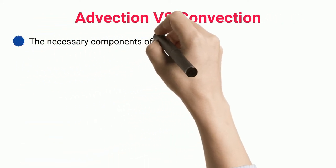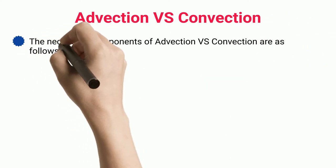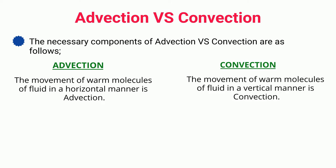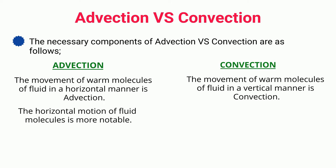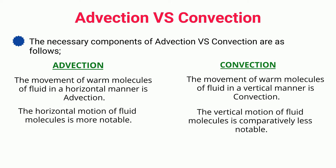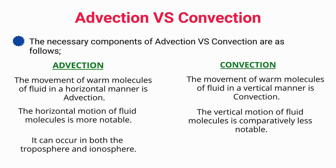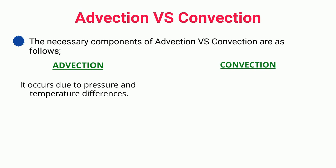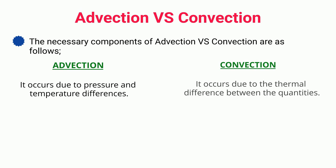Advection versus Convection. The necessary components of advection versus convection are as follows. The movement of warm molecules of fluid in a horizontal manner is advection. The movement of warm molecules of fluid in a vertical manner is convection. The horizontal motion of fluid molecules is more notable, while the vertical motion of fluid molecules is comparatively less notable. Advection can occur in both the troposphere and ionosphere, whereas convection has a limitation of heat transfer up to the troposphere layer. Advection occurs due to pressure and temperature differences; convection occurs due to the thermal difference between quantities.